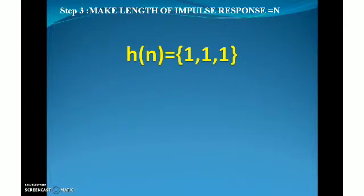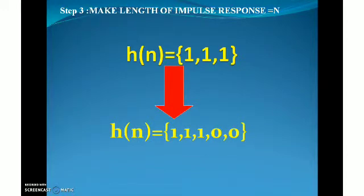In step three, I am going to make the length of my impulse response h(n) to N. The N value is 5, so h(n) is padded with M minus 1 = 2 zeros, giving me the new h(n) of length 5.